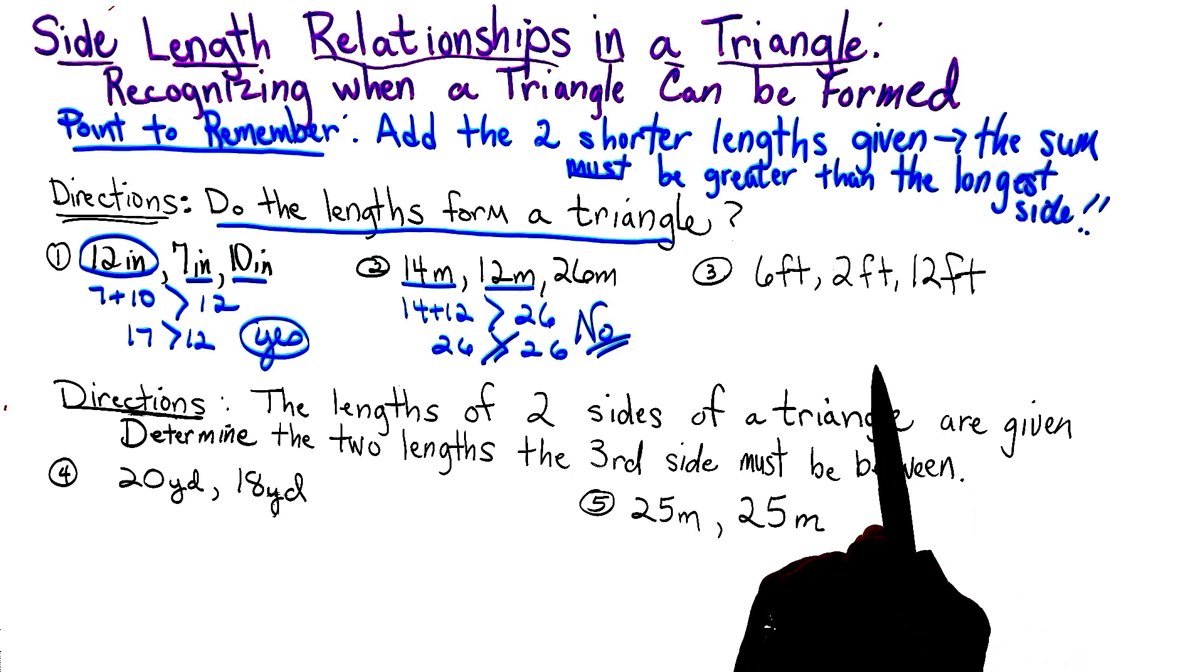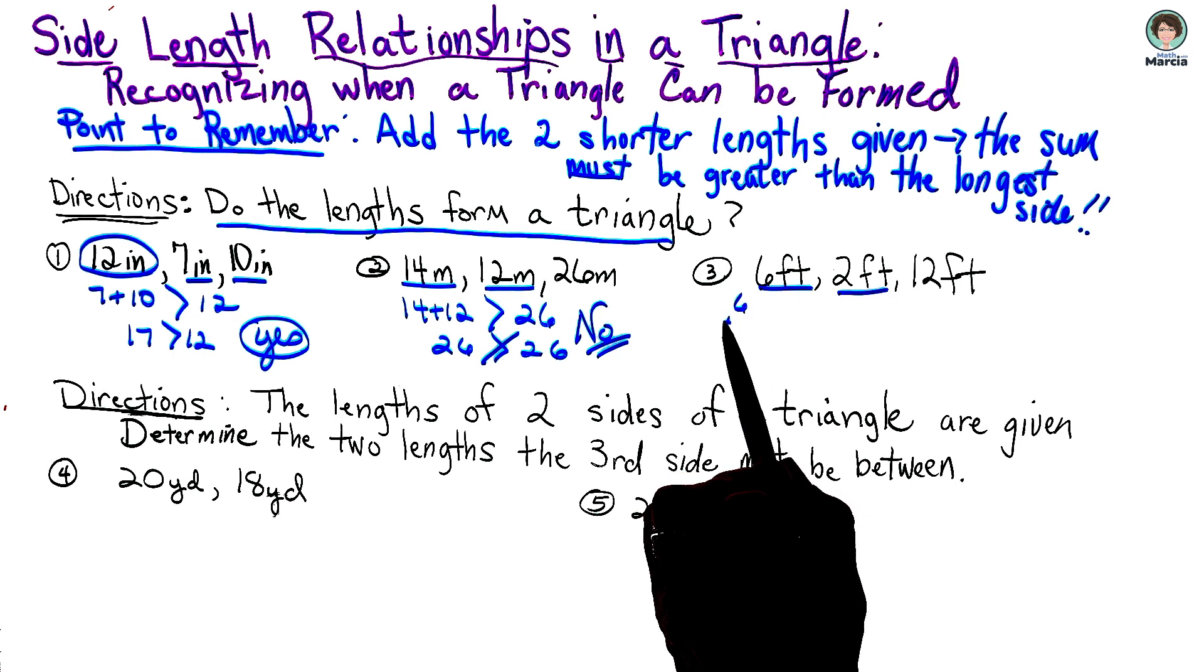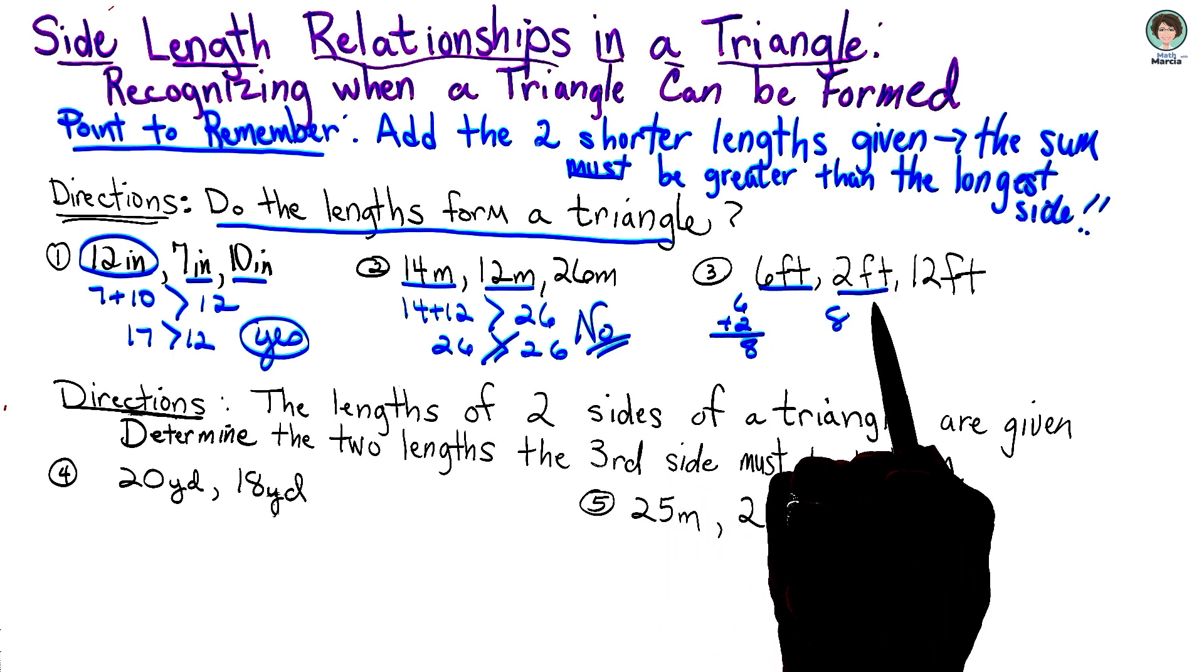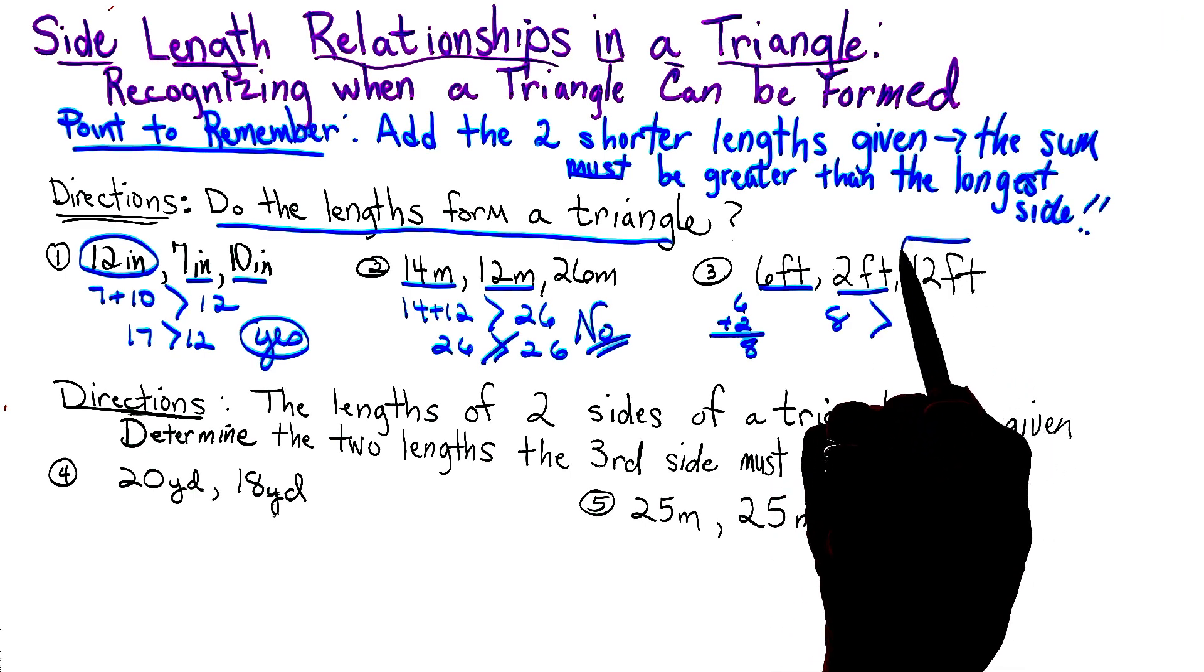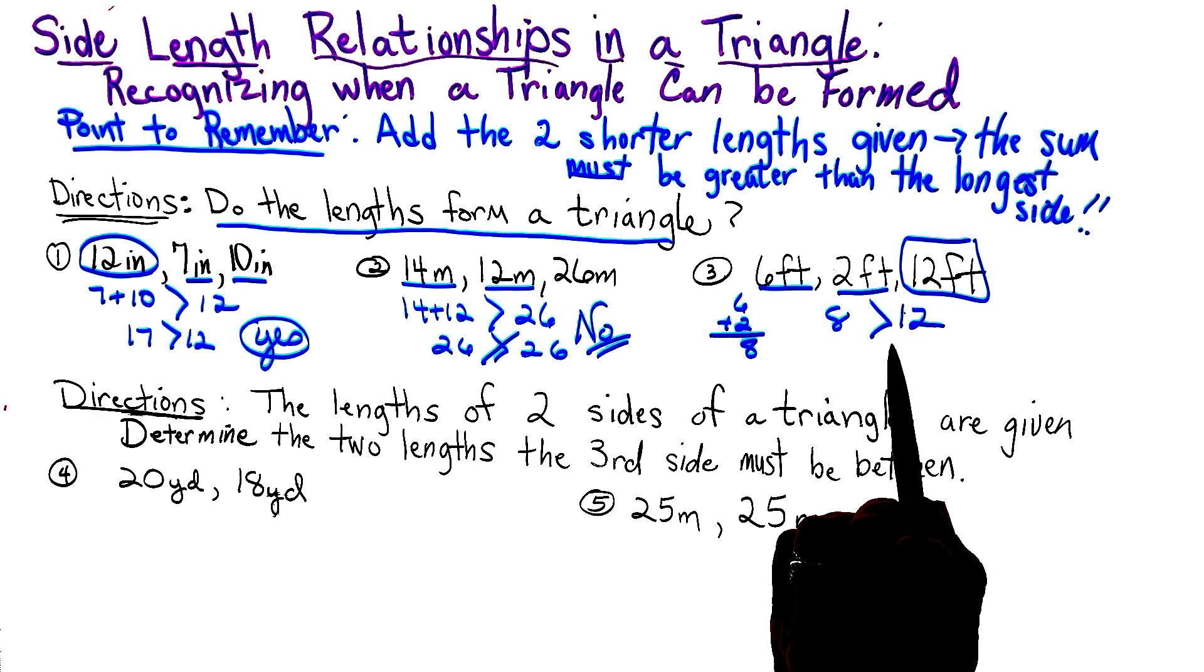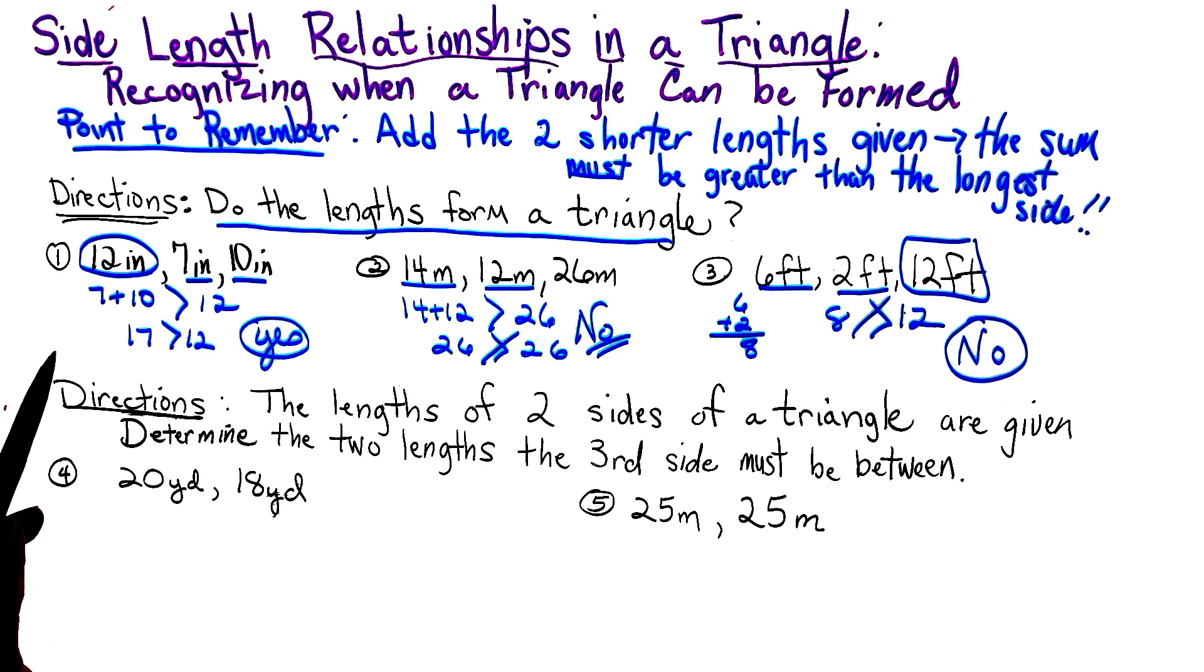And for the last one, you take your two shorter lengths. So 6 plus 2 is 8. So is 8 greater than the longest side that is given, 12? We know that is not true, so this answer is no also. The only one that would actually form a triangle would be number 1.